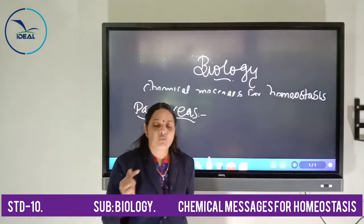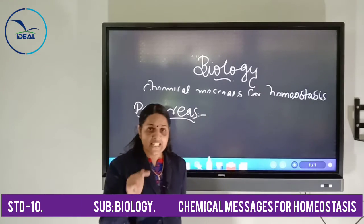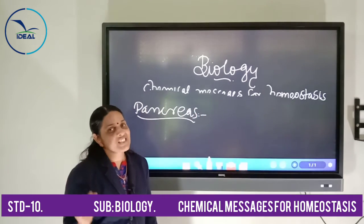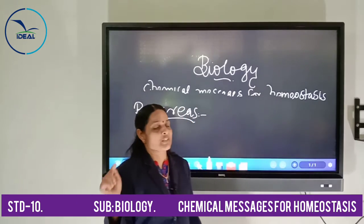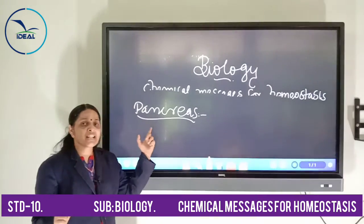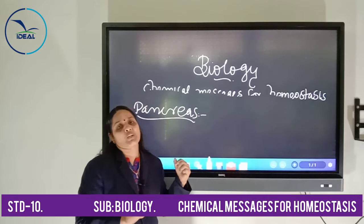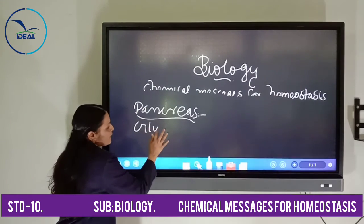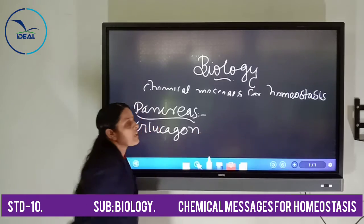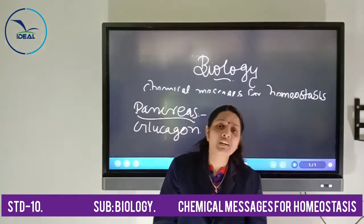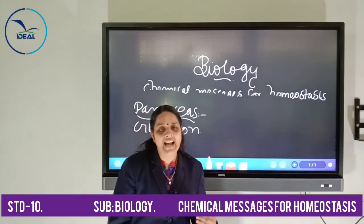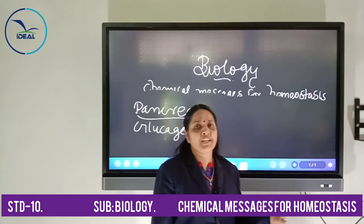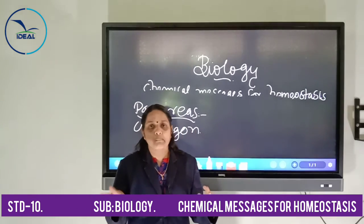When the level of glucose decreases in the human body, that information passes through the nervous system to the pancreas. In the pancreas, the alpha cells get stimulated and produce the hormone glucagon. Glucagon is responsible for converting the stored glycogen back into glucose. This process continues until the level of glucose returns to normal in the human body.